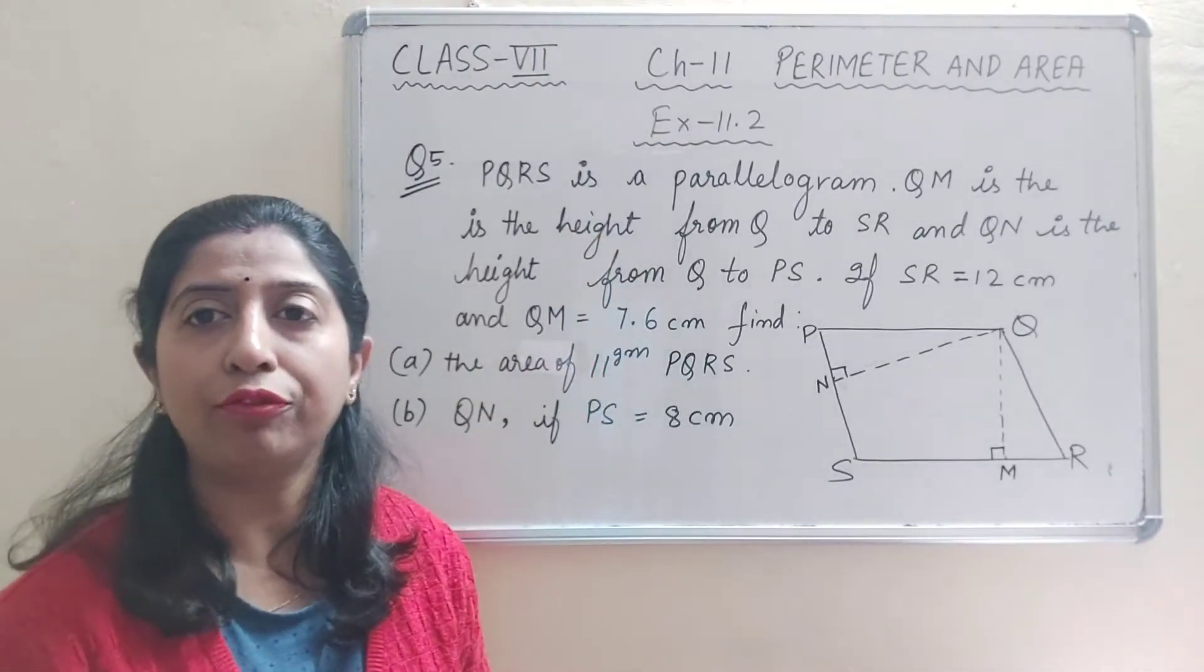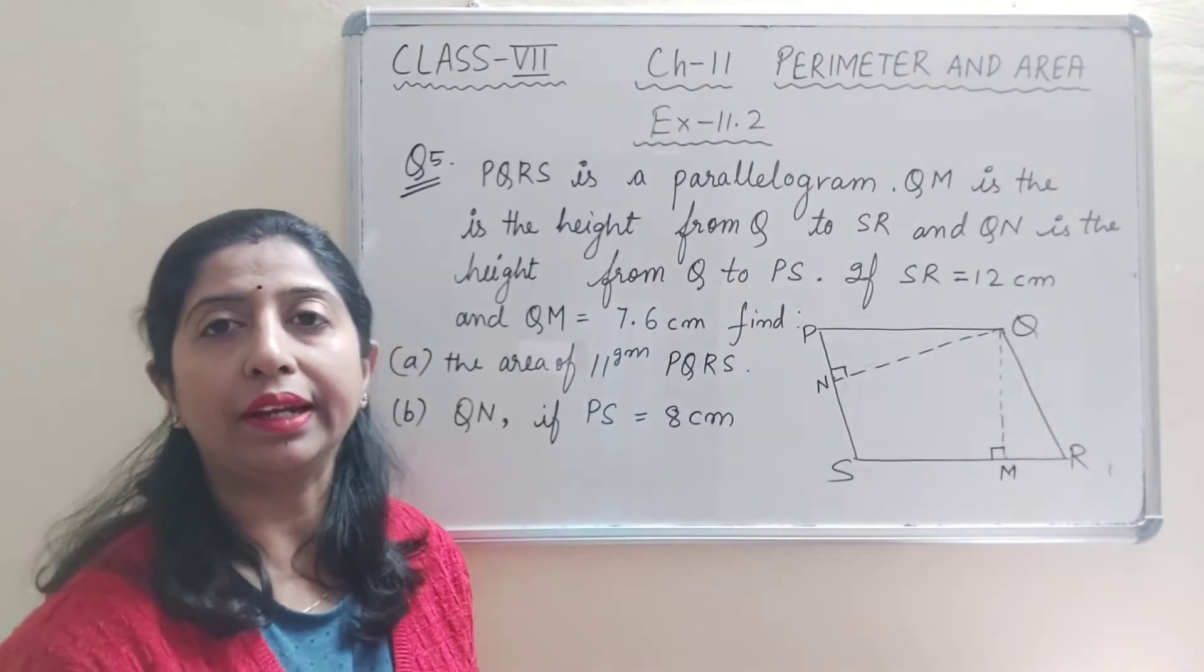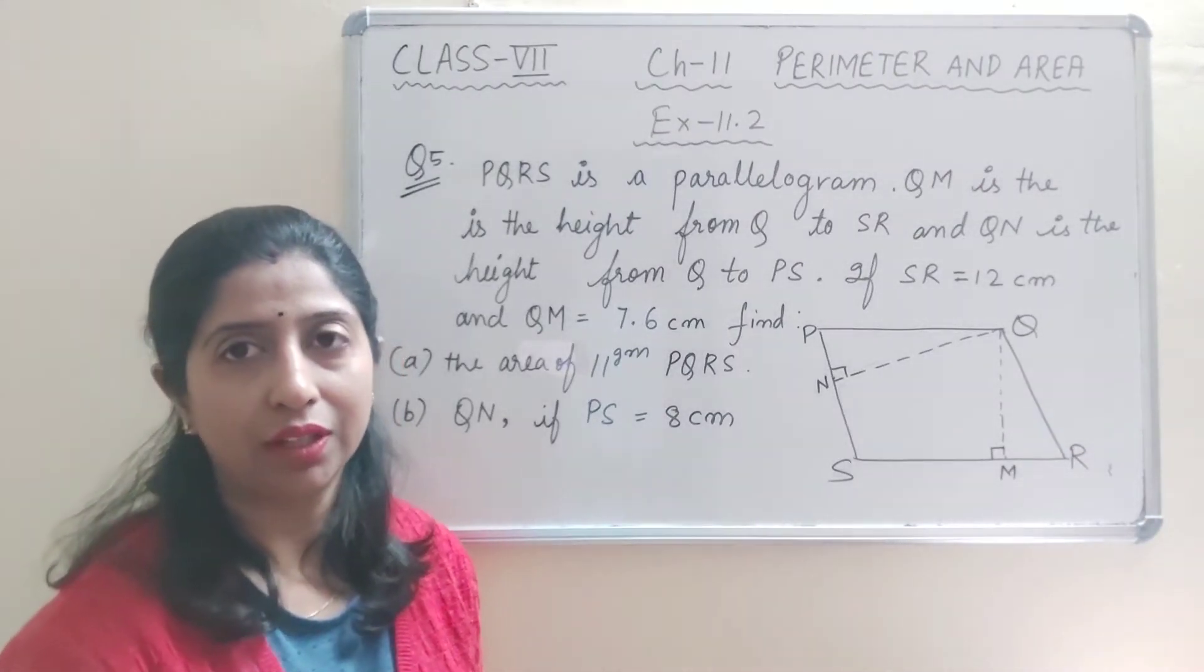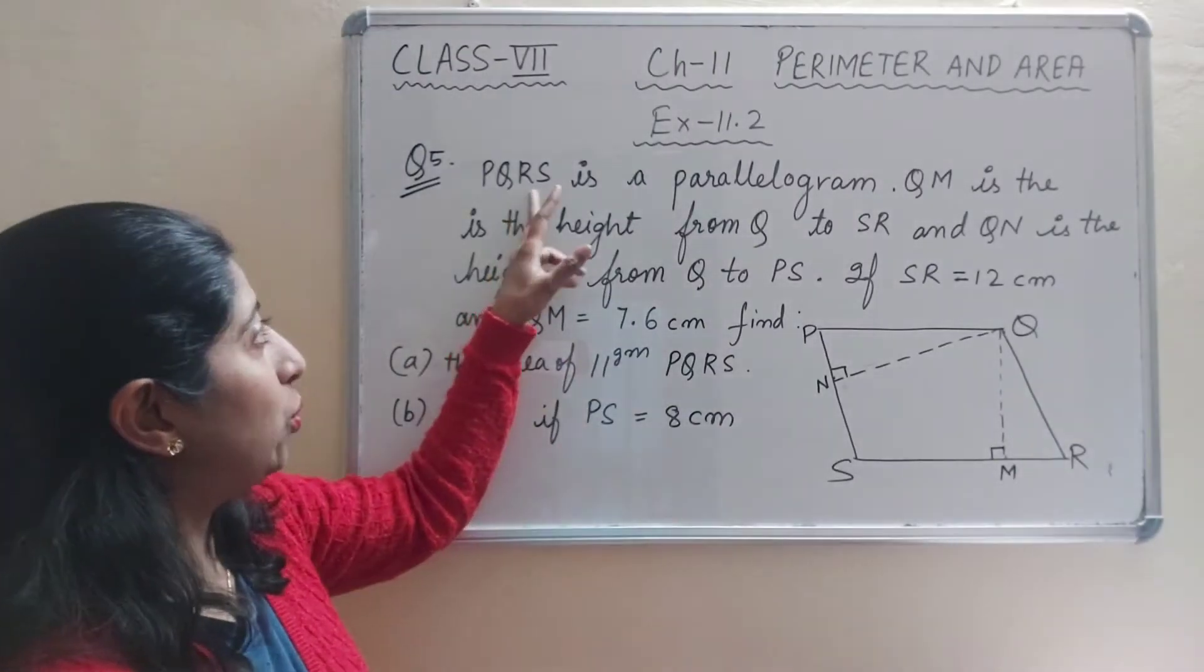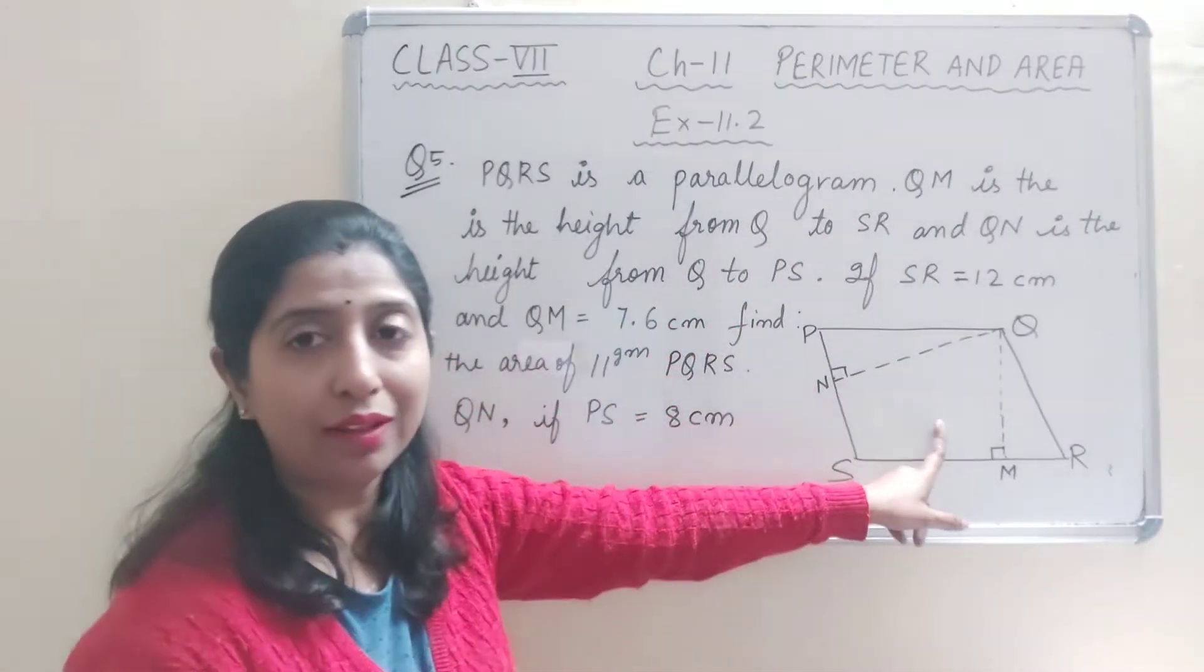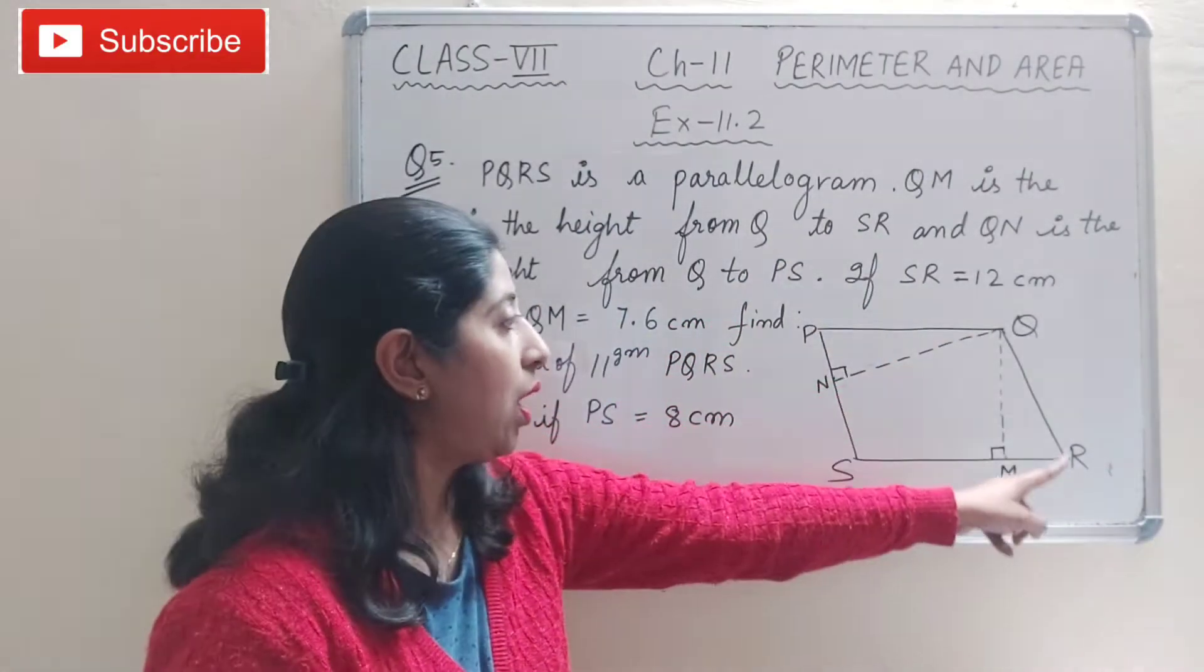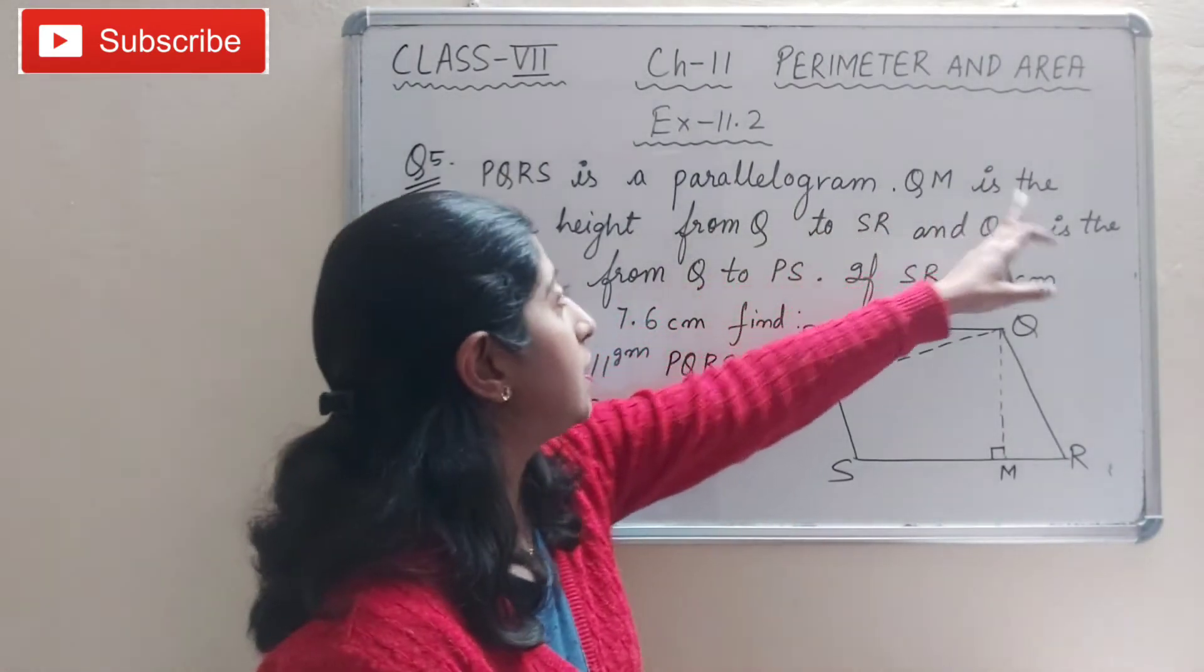This is question number 5 of exercise 11.2, Perimeter and Areas of Class 7. Let's see what the question is. PQRS is a parallelogram, as you can see in the figure. QM is the height from Q to SR.